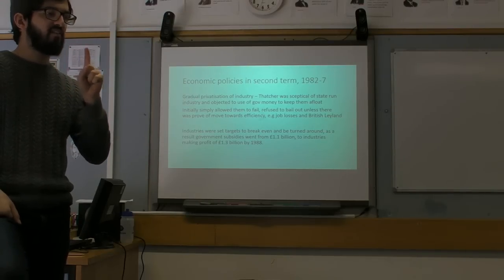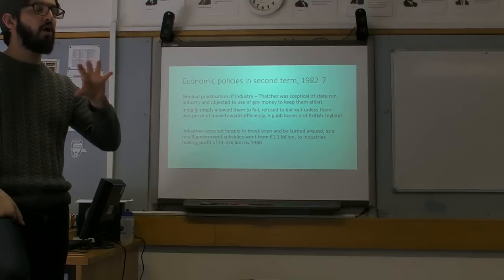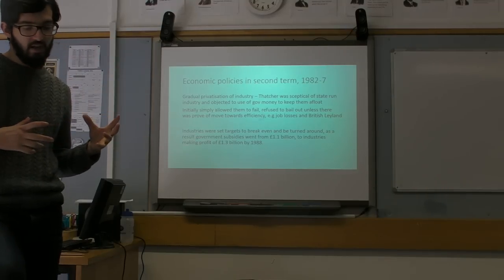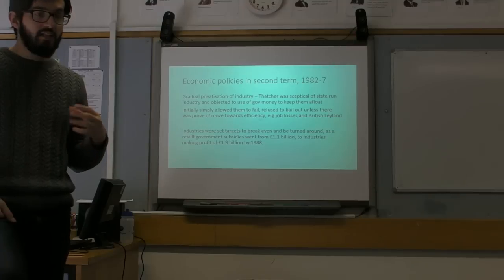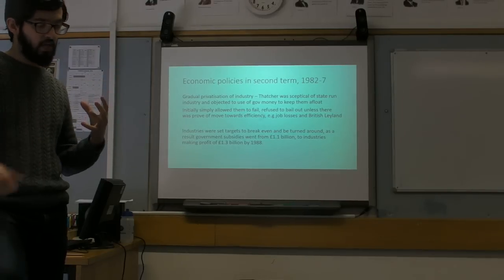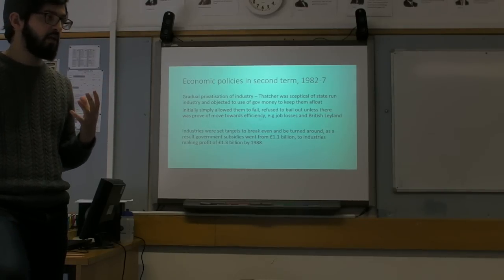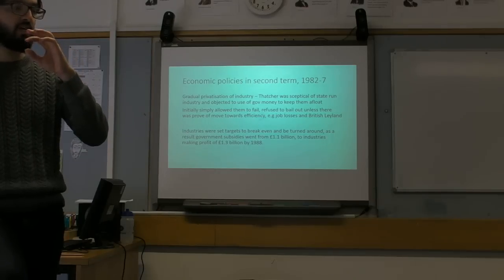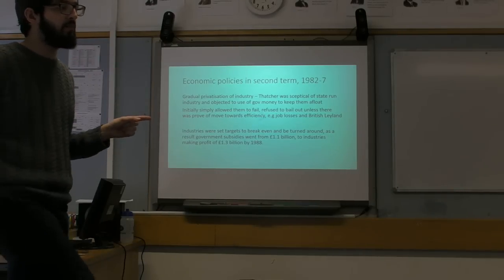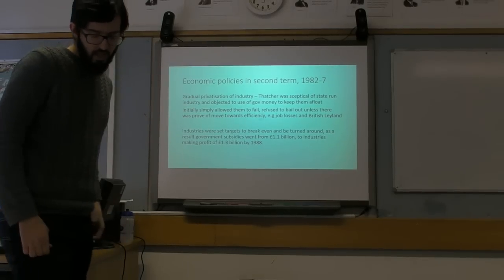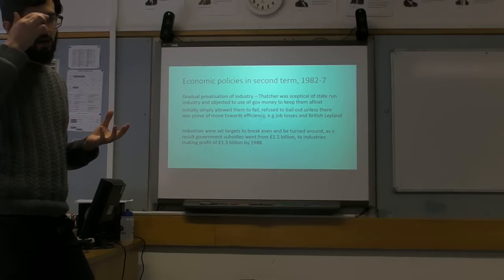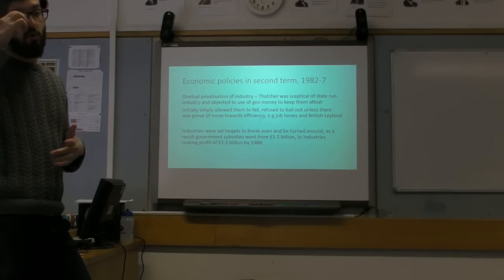As a result, you could argue this is actually a somewhat successful policy. It goes from a situation in 1979 where the government is paying out over a billion pounds in subsidies to failing industries. And by 1988, industries as a whole, public industries, are now making a profit, collectively, of 1.3 billion. So the policy does turn things around from industries making losses and relying on subsidies to actually turning profits. Again, the way she does that is more questionable since it relies on job losses to help achieve that.